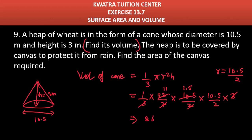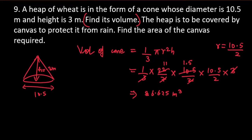Now we have to find area of canvas required. Area of canvas means we need to cover this part to prevent water, to protect it from the rain. So what area of canvas will be? What area will be here? CSA of cone.